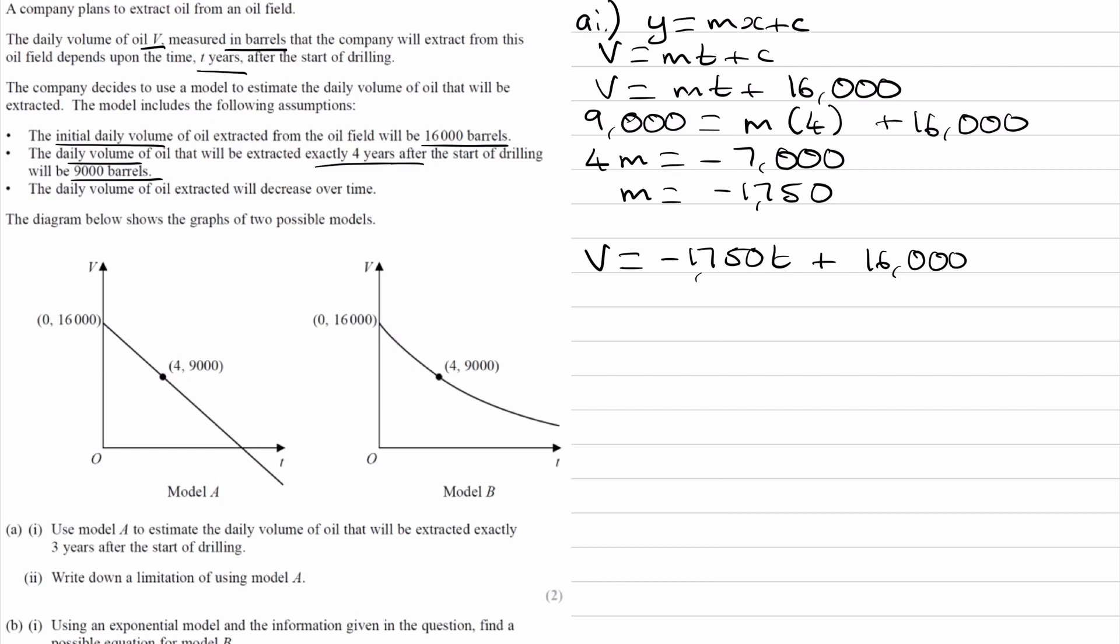Our equation is then V equals minus 1,750t plus 16,000. We can put in t equals 3, so the volume becomes 10,750.